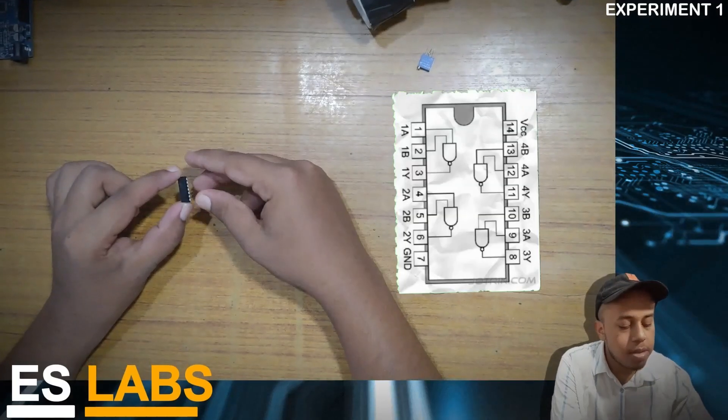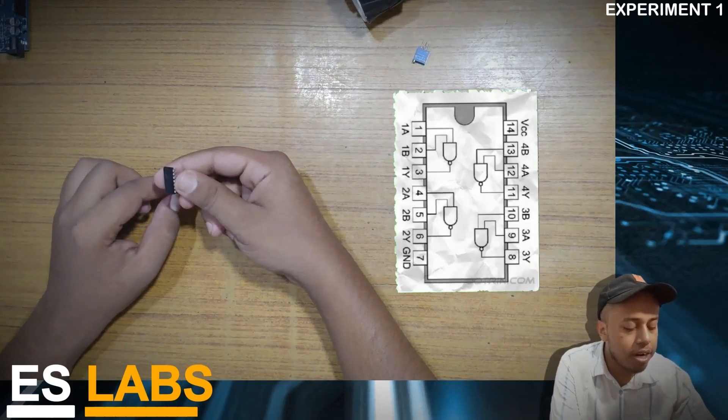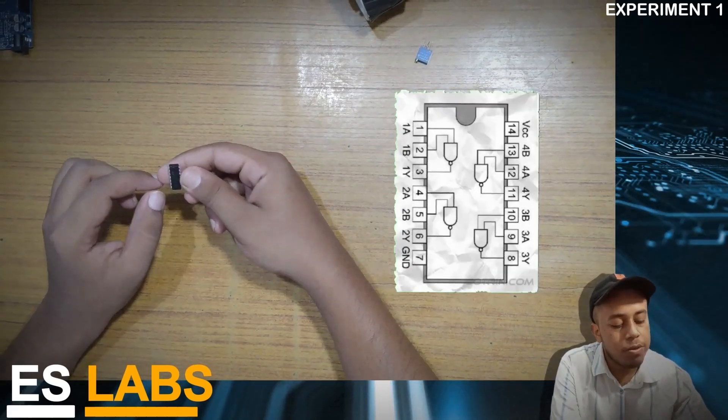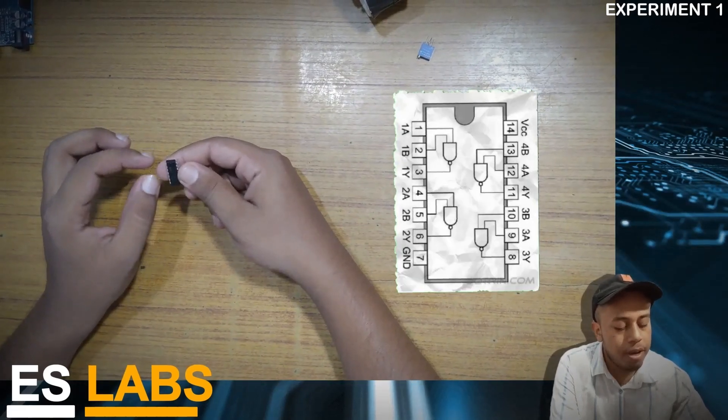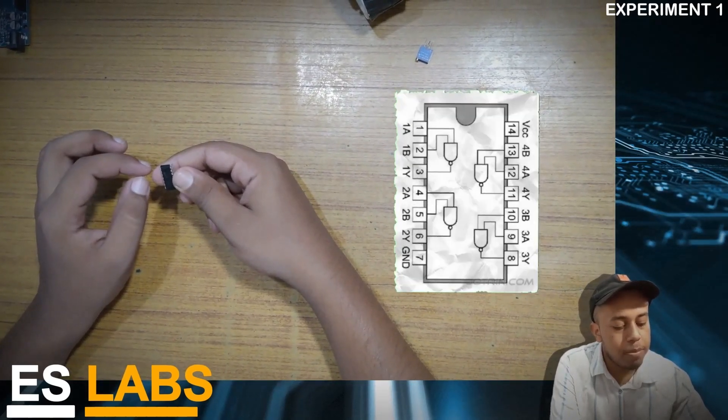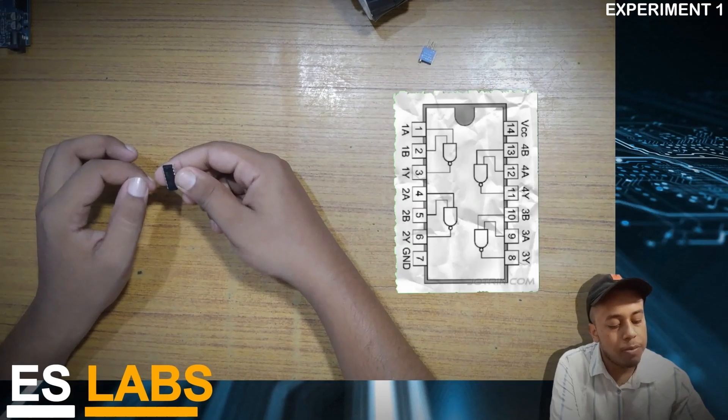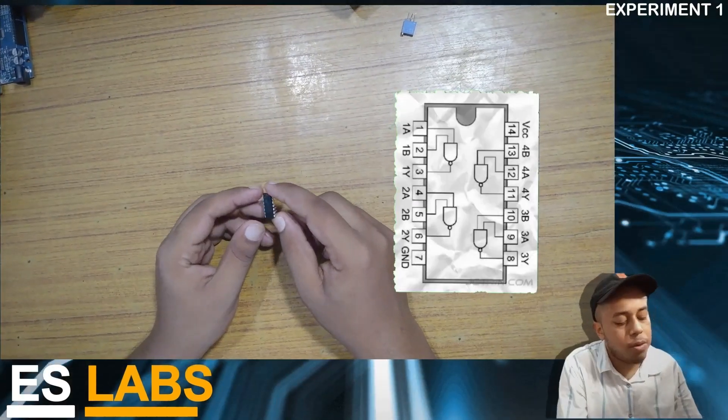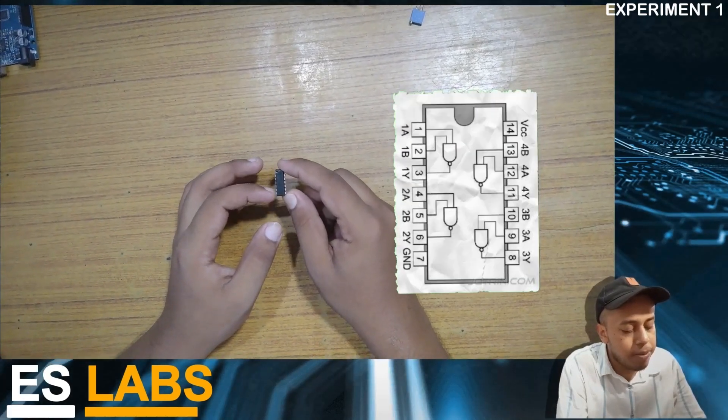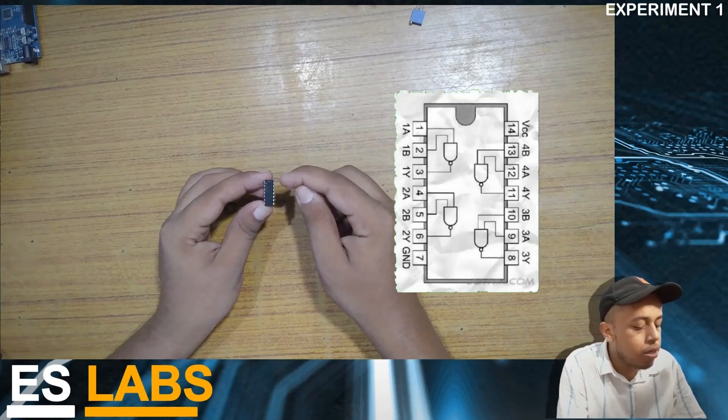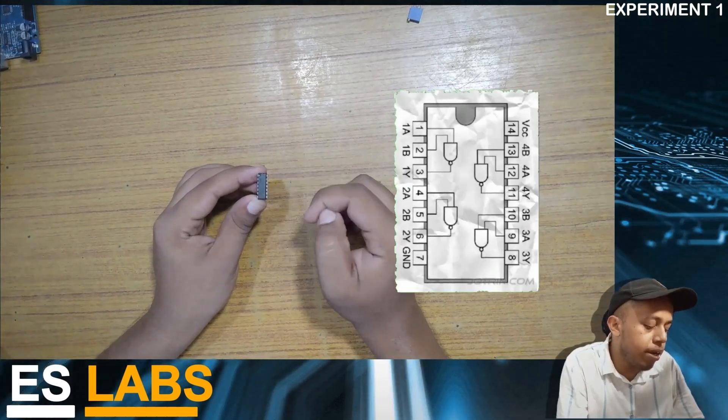So this is IC7400 which has 4 NAND gates but we are going to use the NAND gate present between pin 1 and pin 3, where pin 1 and pin 2 are input and pin 3 will be our output. There is a notch present at the top of this IC. From the left of this notch the pins present are pin 1 to pin 7 and on the right of this notch the pins present are pin 14 to pin 8.